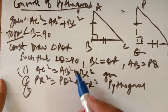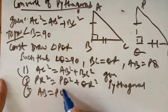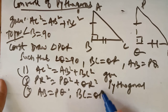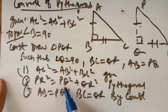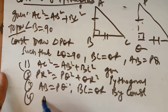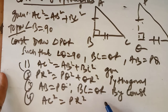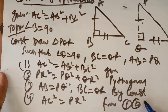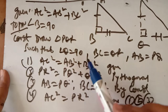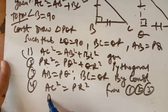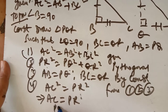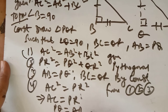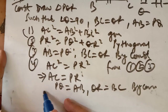Since AB = PQ and BC = QR by construction, and PR² = PQ² + QR² = AB² + BC² = AC², we get AC = PR. So we have PQ = AB, QR = BC, and AC = PR. Therefore triangle ABC is congruent to triangle PQR by SSS congruence.